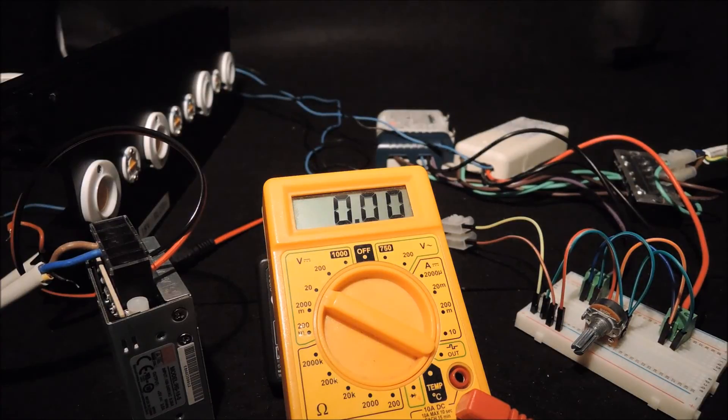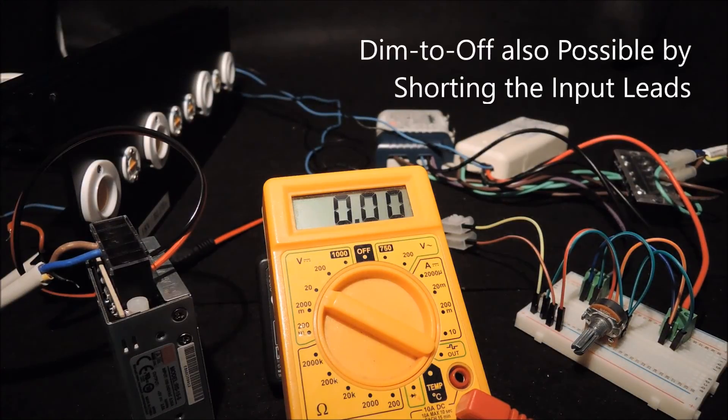As we have mentioned, the dim to off function can also be achieved by shorting two input terminals together.